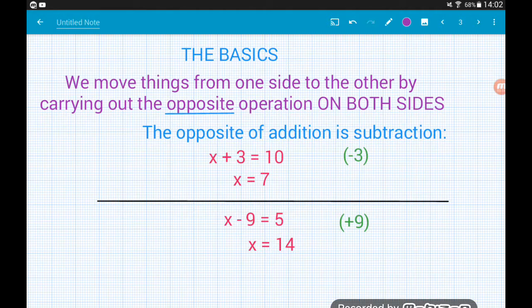On the flip side, if we start with an equation like x minus 9 equals 5, the opposite of subtraction is to add. So to move that minus 9 we add 9 to both sides. The minus 9 on the left disappears. On the right we do 5 plus 9 which gives us 14. x equals 14.